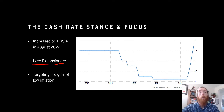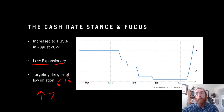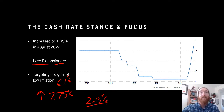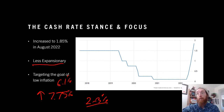The RBA, when talking about why they increased the cash rate, is targeting the goal of low inflation. Inflation at the moment is at 6.1% and is expected to increase upwards of 7.75% by the end of the year. They're trying to increase the cash rate to slow that inflation rate down back towards the target range of 2-3% on average over time. The RBA sees that as a precondition to achieving all their other goals, including full employment and strong economic growth.